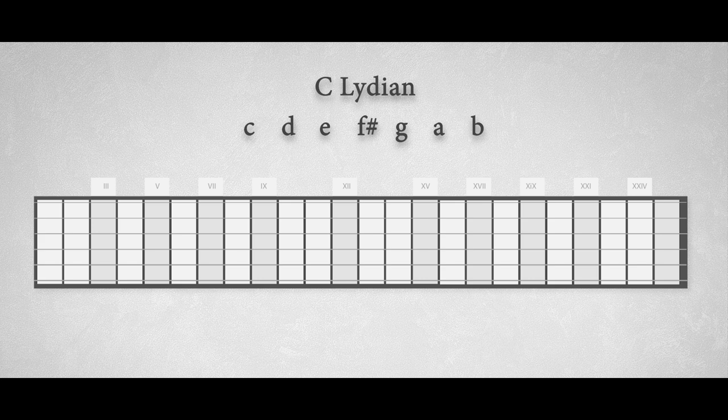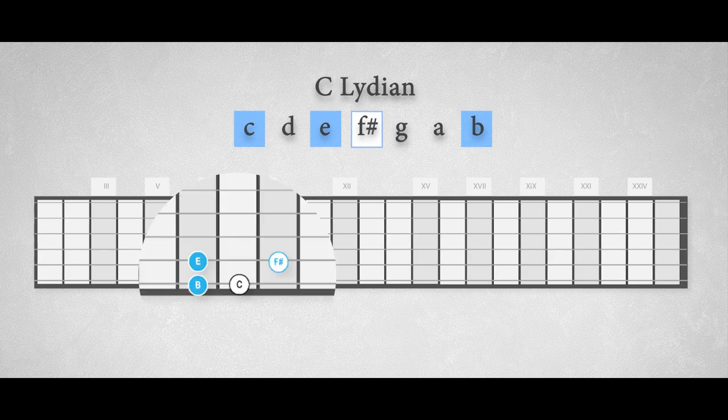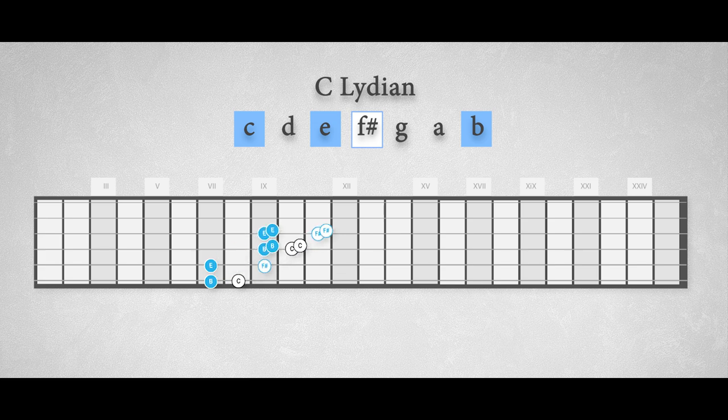In the Lydian mode we can play exactly the same pattern as we did in the Phrygian mode, starting on the major 7th of, let's say, a C major 7 chord, like this, B, C, E and F sharp. It's a C major 7 arpeggio where we replace the not very meaningful fifth with the characteristic raised fourth degree, the F sharp.